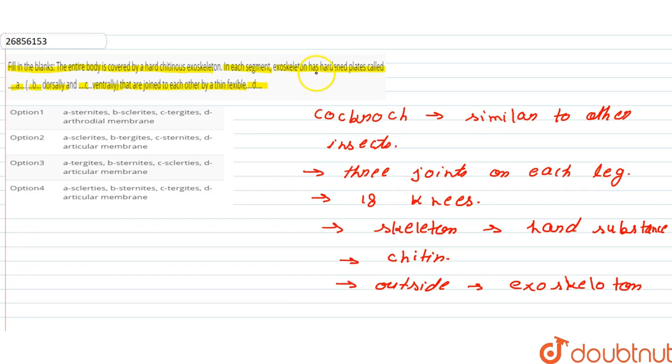Now, what are the components of the exoskeleton? Each hardened plate of the exoskeleton is called a sclerite. These sclerites are positioned dorsally and ventrally.